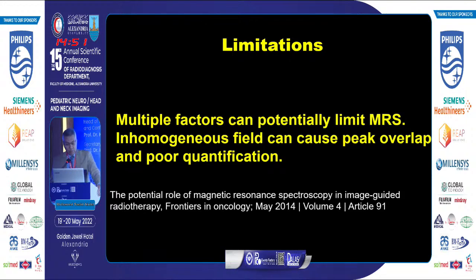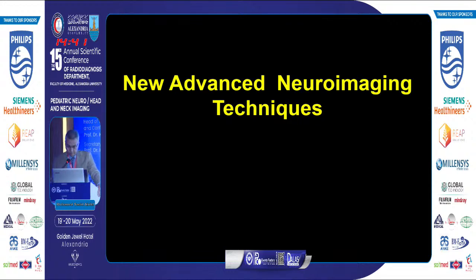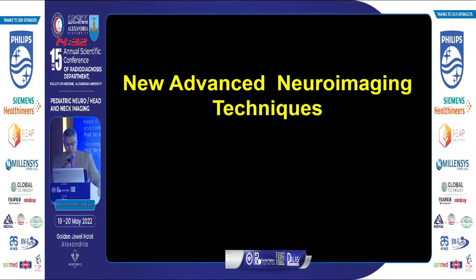The presence of tumor near bone or near a paranasal sinus leads to degradation of the spectroscopic curve with non-conclusive readings. Therefore, we need other advanced neuroimaging techniques to bypass the limitations of these excellent tools, aiming to differentiate high from low-grade neoplasm and post-irradiation necrosis from tumor recurrence.